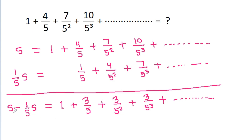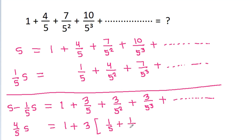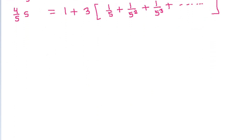So S minus (1/5)S gives us (4/5)S, which is equal to 1 plus 3 times (1/5 + 1/5² + 1/5³ + ...) and so on.